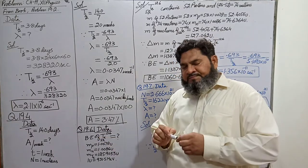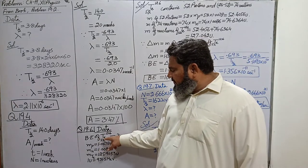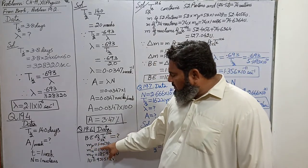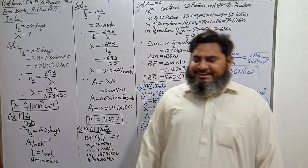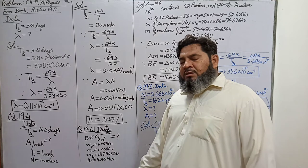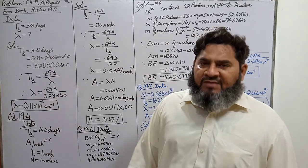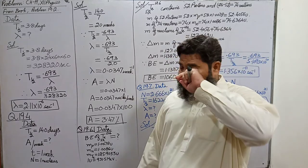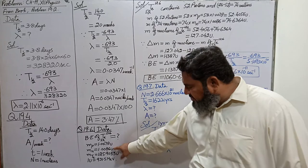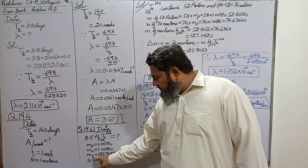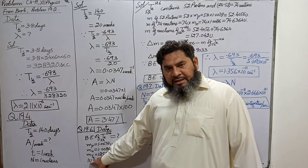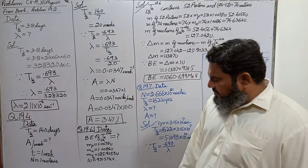Problem 19.6: calculate the binding energy of Tellurium-126 (⁵²Te¹²⁶). Given data: mass of proton = 1.0078 u, mass of neutron = 1.0086 u, mass of Tellurium-126 = 125.9033 u, and 1 u = 931.5 MeV.